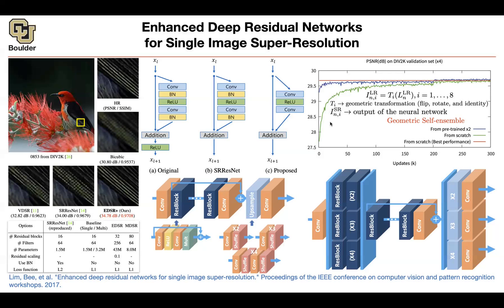You get eight super resolution images and average them out. Before averaging, you must invert the transformations: if you rotated by angle theta, invert that rotation; if you flipped the image, unflip it. Then assemble and average to produce your final super resolution image. This is data augmentation at testing time.